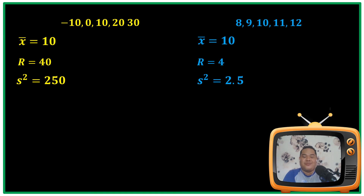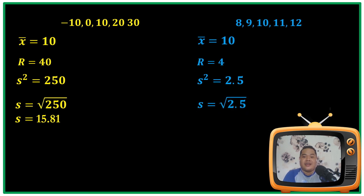Now let us compute the standard deviation. All you have to do is extract the square root of the variance. The standard deviation of the first data set is 15.81, and the standard deviation of the second data set is 1.58. Based on the results, we can say that the first data set is wider than the second one.